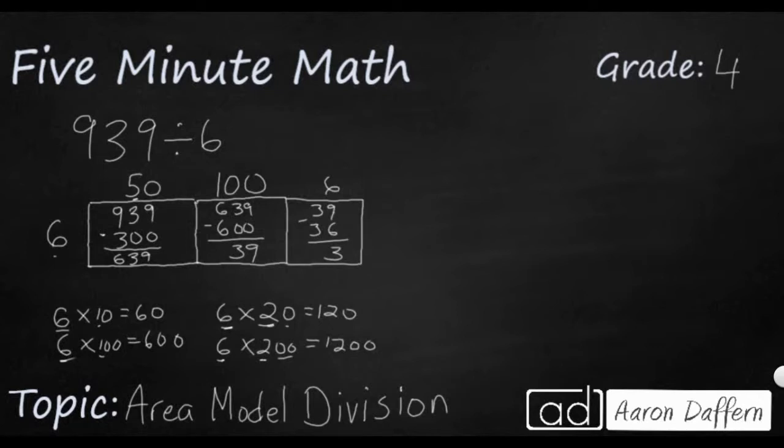Once your remainder is smaller than your divisor, that means you're done dividing. So what's the answer? Well, what we do is we just take all of our partial dividends up here and we add them up. So 50 and 100 and 6 is going to equal 156. And then we have to keep that remainder of 3.